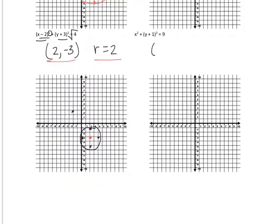For the last one, the ordered pair is (0, negative 1) and the radius is 3. Go to (0, negative 1) and make a dot. Then go up 3, right 3, left 3, and down 3 to complete the circle.